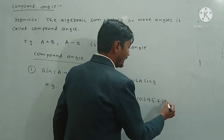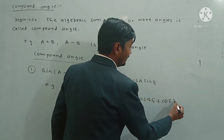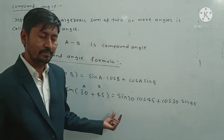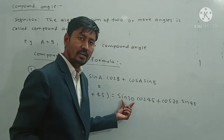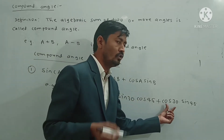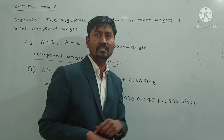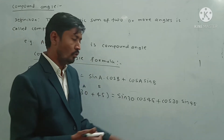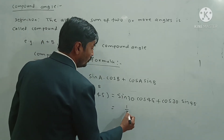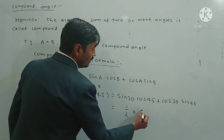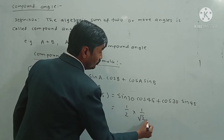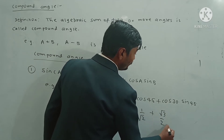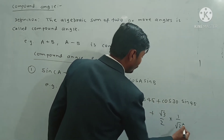Expanding: cos A with sin A cos B plus cos A, where A means 30, and sin B means 45. So we substitute: sin 30 is 1/2, into cos 45 is 1 by root 2, plus cos 30 is root 3 by 2, and sin 45 is 1 by root 2.